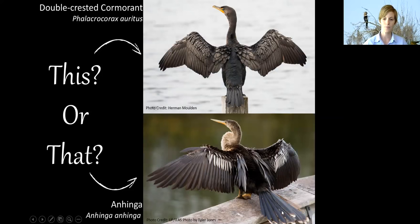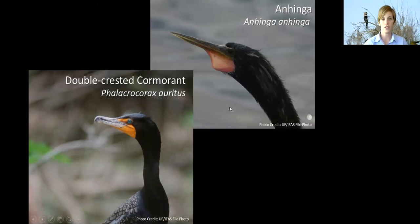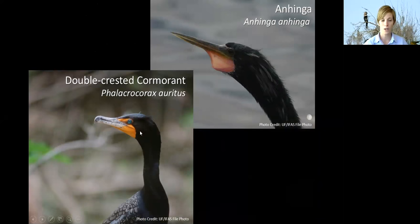The anhinga's tail is also tipped with a lighter coloration, like a little stripe at the bottom. If you get a chance to look up close, note the difference in the bill. The anhinga has a very sharp pointed bill compared to the heavy, curved bill of the cormorant. The anhinga uses this to spear prey underwater, whereas the cormorant uses it to hook and grab prey. Their approach to prey is different and the bill is designed to accommodate that.